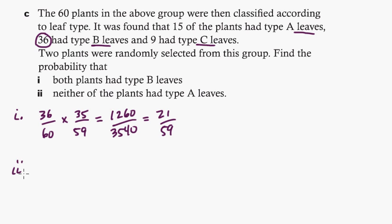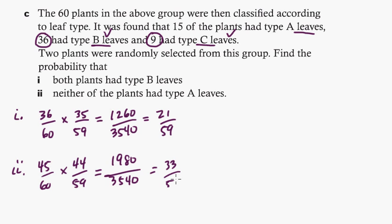Now let's look at neither of the plants have type A leaves. So it's going to be a B or it's going to be a C leave, right? So we have 36 plus 9, so that's going to be 45 out of 60, times, it's going to be, take one away, 44 out of 59. So again, we're going to have the 3540 here. Now, this is 45 times 44 is 1980. I've done this problem before, so I remember that because 1980 is a miracle on ice. Anyway, if you reduce that 1980, it's 33 out of 59.